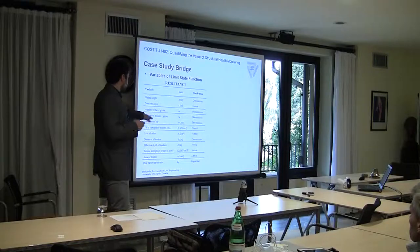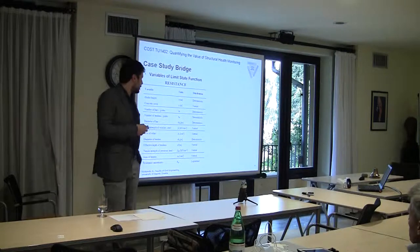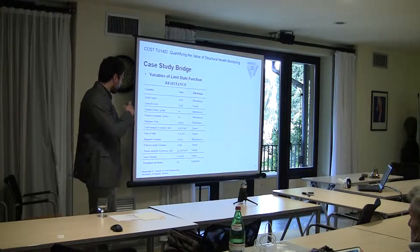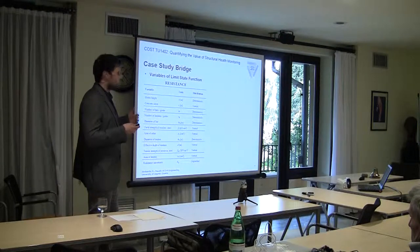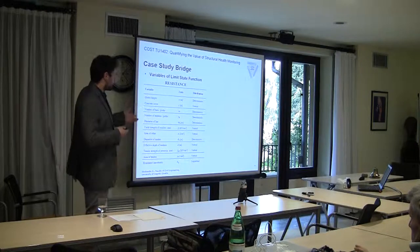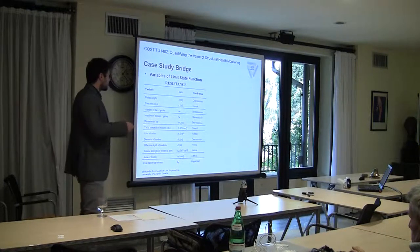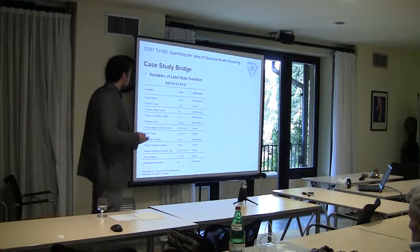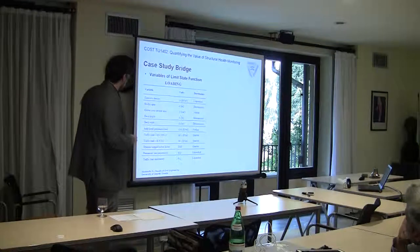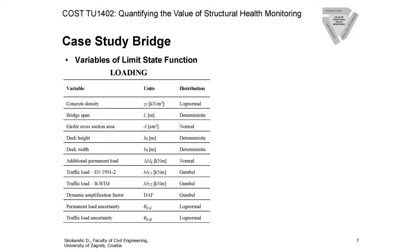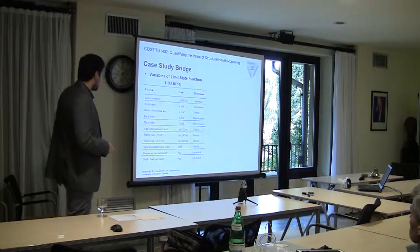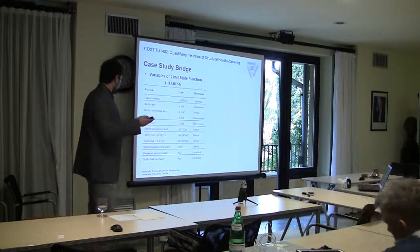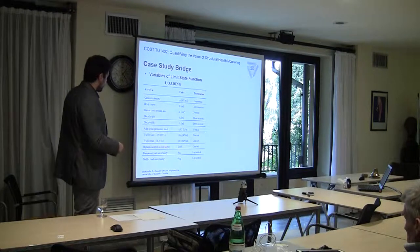The detailed parameters — standard deviation, mean, and characteristic values — are available in the paper. Where we had real-life measurements, we took those values directly; otherwise, we took distribution suggestions from the probabilistic model code and used the measured mean values with the code's guidance on evaluating standard deviation. This covers the resistance side of the equation. For loading, we did two different types of assessment: first using the traffic load model from Eurocode for designing new bridges as our prior value, and second using a traffic load model obtained from bridge weigh-in-motion measurements, which also included structural data such as influence lines and dynamic characteristics.